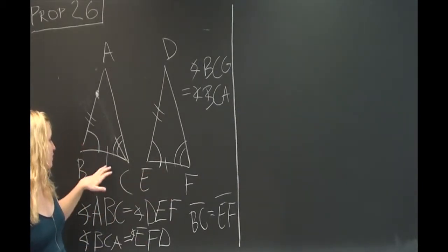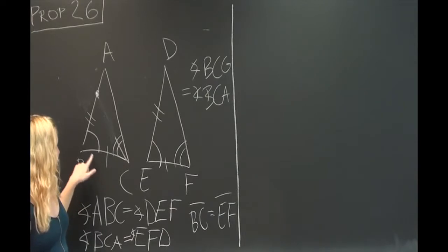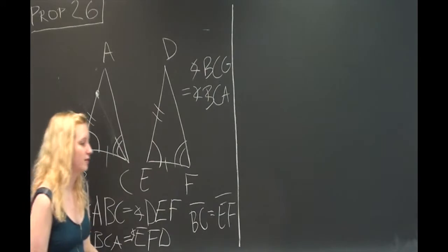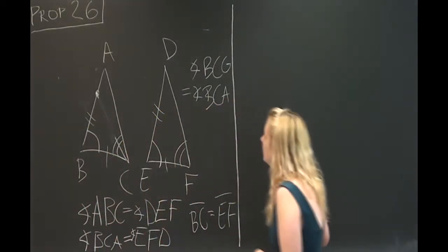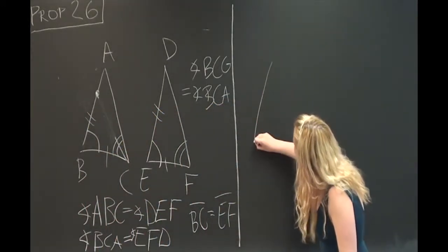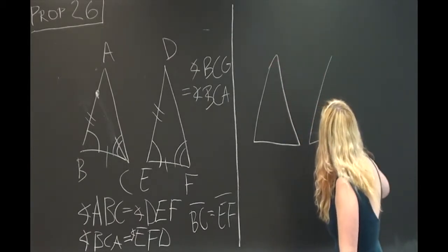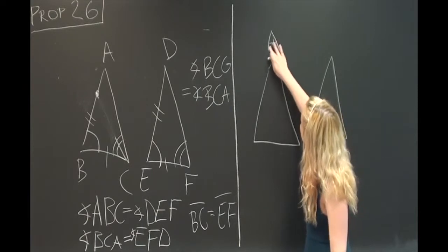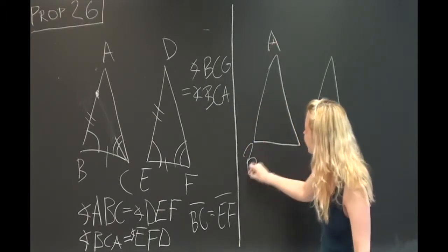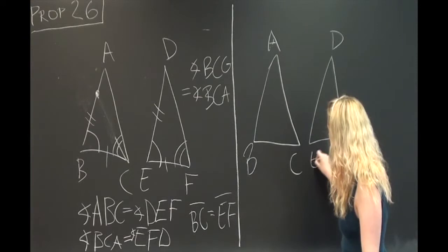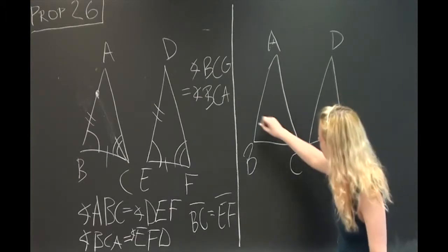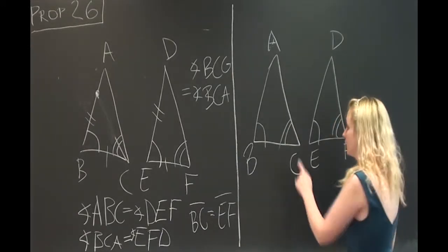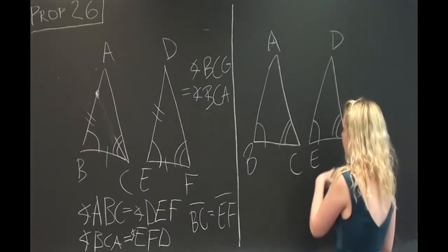So that was our first case where we proved that when you have an angle, a side, and then an angle equal in two triangles, then the two triangles are equal. And now we'll do it again. Except this time, the sides are going to be equal or are going to be opposite one of the angles rather than between them.